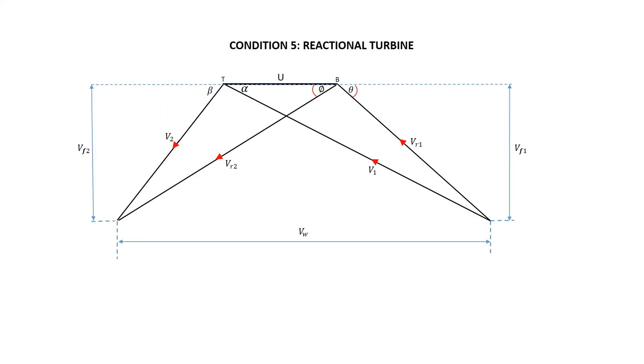The last condition, five, is when we are dealing with a reactional turbine. In a reactional turbine, the blade inlet angle theta equals the turbine outlet angle beta, and also the blade outlet angle phi equals the turbine inlet angle alpha.